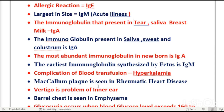McCallum plaque is seen in rheumatic heart disease. Other diseases like myasthenia gravis, multiple sclerosis, and cystic fibrosis — questions from all these diseases appear regularly in competitive exams every year. Short 5–7 minute videos on all these diseases will be uploaded to this channel soon so you can clear all concepts before your competitive exam.